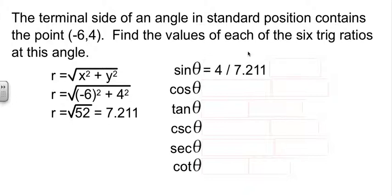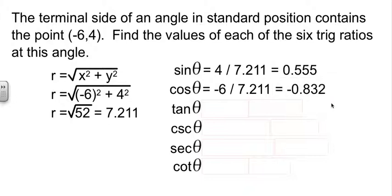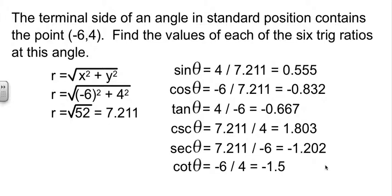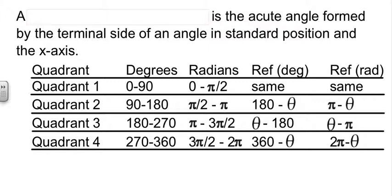Sine of theta is Y over R. And then if I divide that out, I get 0.555 as a decimal. Cosine is X over R. And I can divide that and get a decimal. Cosecant is R over Y. Secant is R over X. And cotangent is X over Y. And I let my calculator do most of the heavy lifting for me. So those problems aren't too bad. It's just a matter of finding your value for R and then working with it.